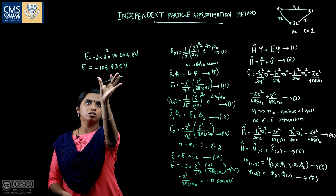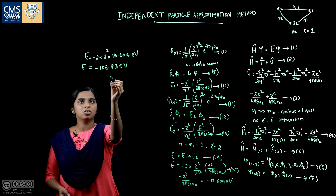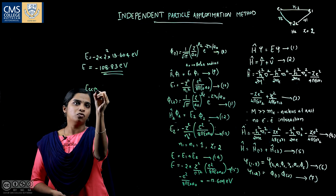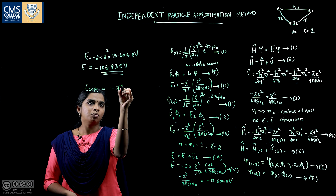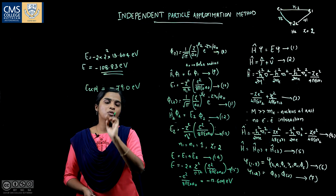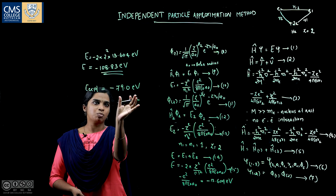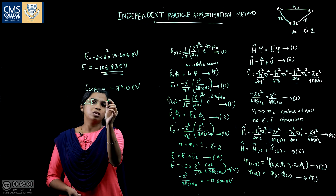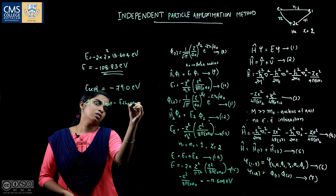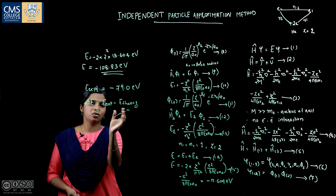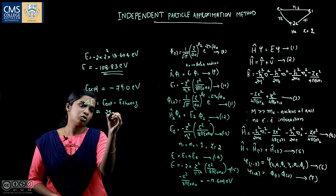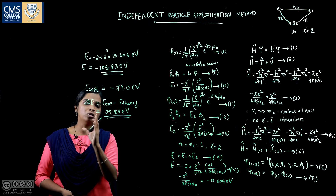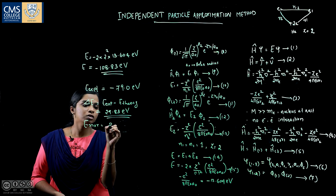Comparing this theoretical value with the experimental value for helium — obtained from its first and second ionization energies — the experimental energy is −79 eV. The difference is ΔE = E_experiment − E_theory ≈ 29.83 eV, which represents an error of approximately 38%.